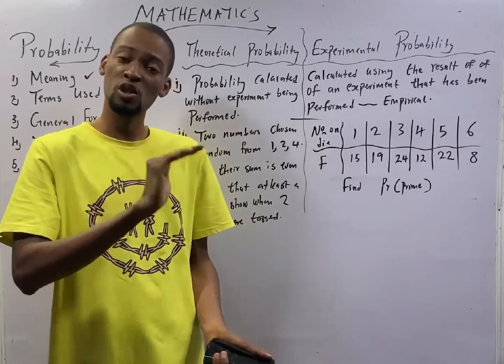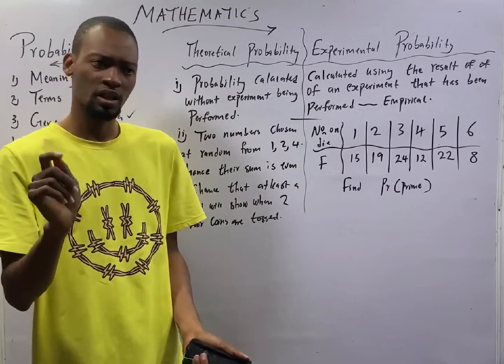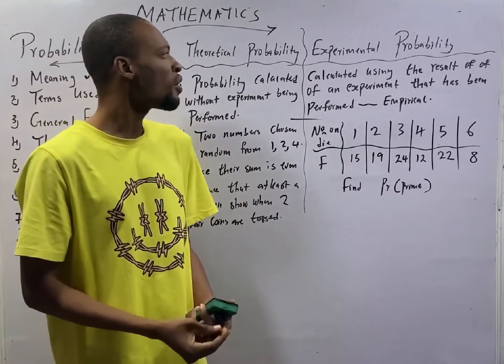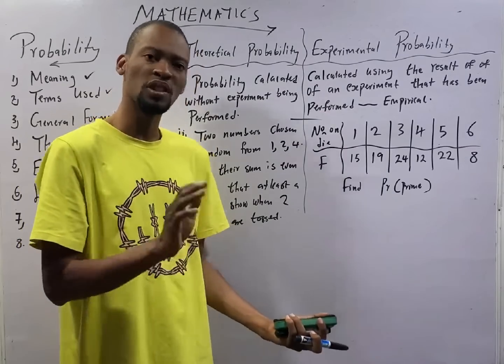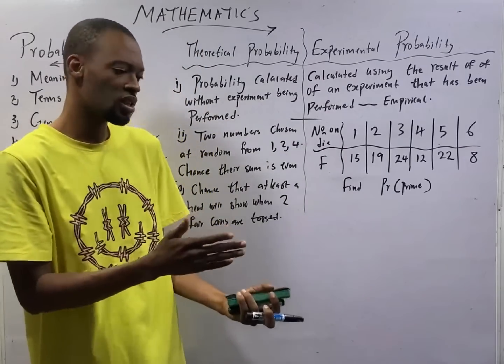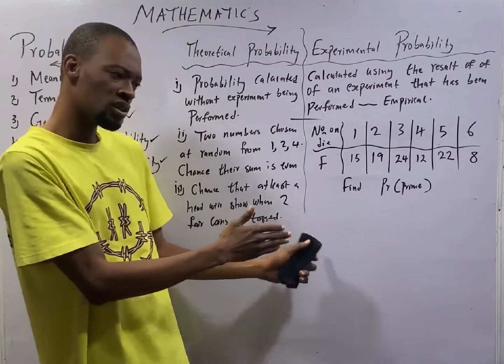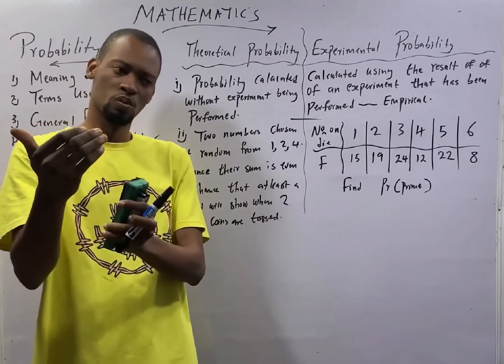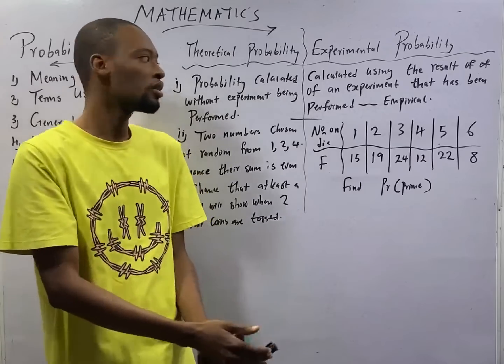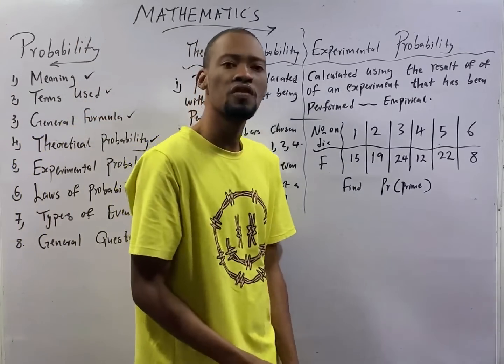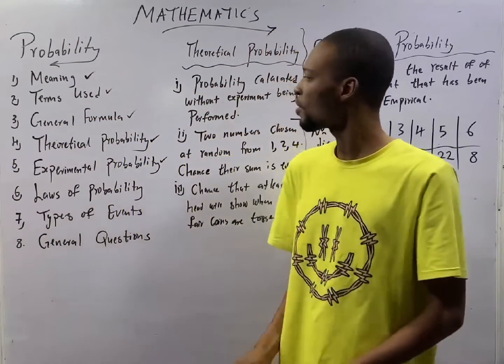The probability of sure events is 1. Then, for event that is not impossible or that is not sure, probability is 1 over something, 1 over something, 1 over something, which is from 0.something to lesser than 1. That is the range of values for probability or for possibility.